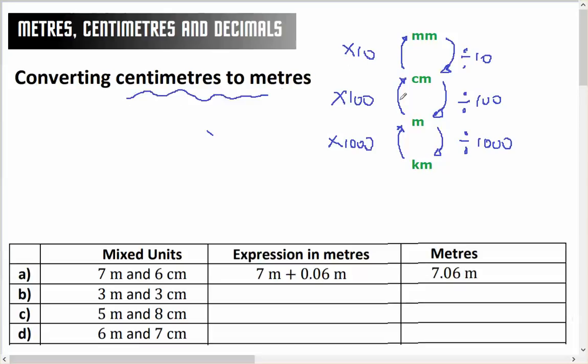I'm going from centimetres to metres. Centimetres to metres means I'm going from there to there, so I'm going to divide by 100.